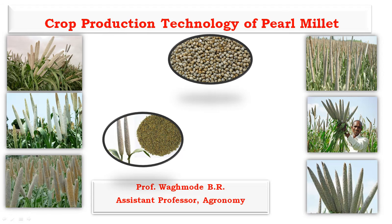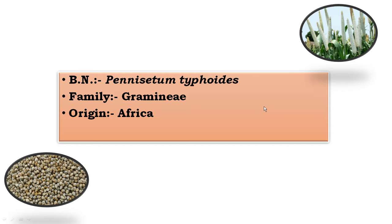Hello friends, I am Professor Vagmadi B.R. Today we will discuss the topic on crop production technology of pearl millet. The botanical name of pearl millet is Pennisetum typhoides or Pennisetum glaucum, and the family it belongs to is Gramineae. The origin of pearl millet is from Africa.